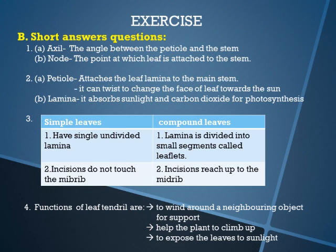Lamina is the next one, whose function you should write: it absorbs sunlight from the leaf surface and carbon dioxide from the stomata for photosynthesis.